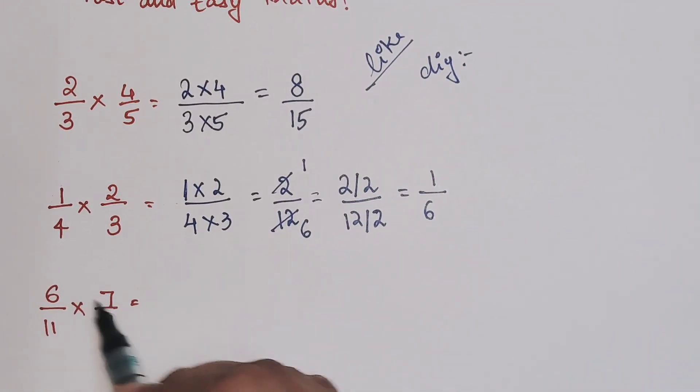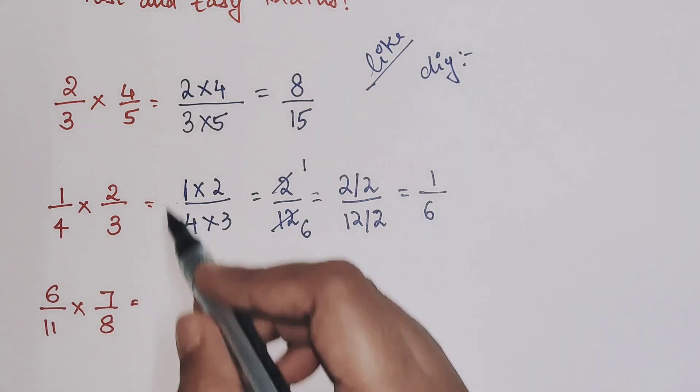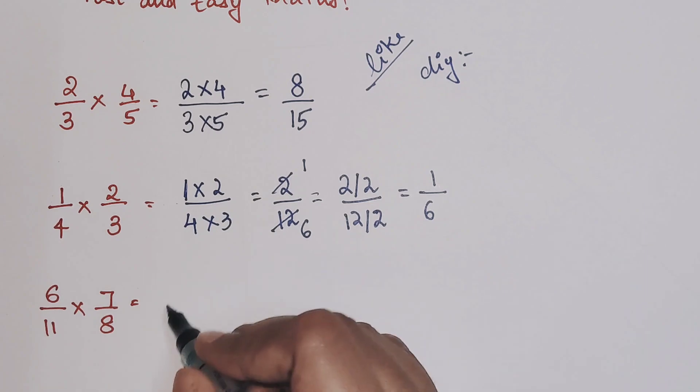So now very quickly over here we can see 6 into 7. Now I am not going to do this step. So 6 into 7, we can directly do the multiplication. We are going to get 42, and 8 into 11 gets you 88.